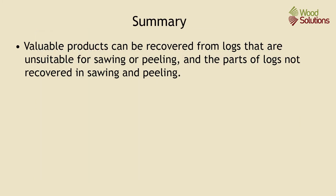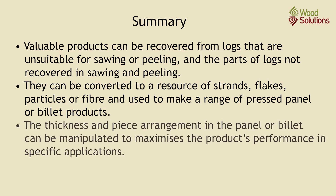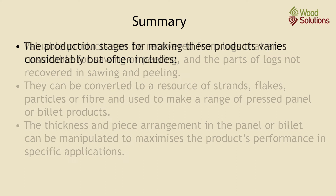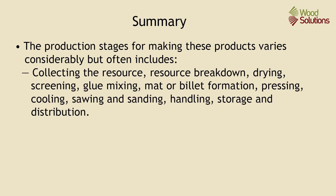In summary, valuable products can be recovered from logs that are unsuitable for sawing or peeling, and from parts of logs not recovered in sawing and peeling. They can be converted to a resource of strands, flakes, particles or fibres and used to make a range of pressed panel or billet products. The thickness and piece arrangement in the panel or billet can be manipulated to maximise the product's performance in specific applications. The production stages for making these products often include collecting the resource and resource breakdown, drying, screening, glue mixing, mat or billet formation, pressing, board sawing and sanding, and handling and storage.